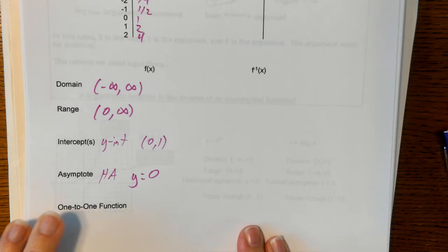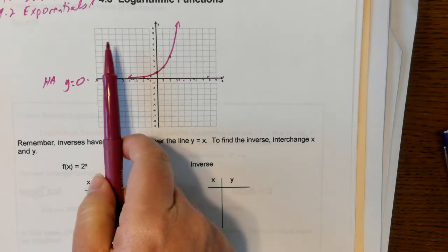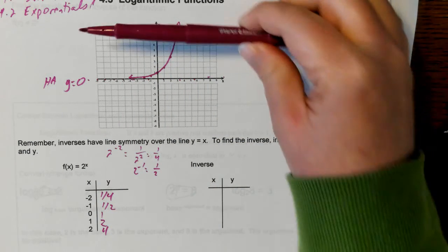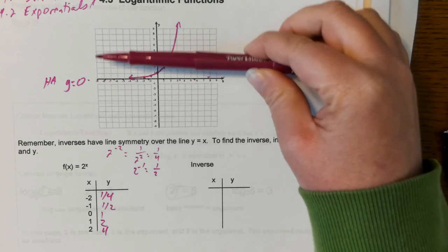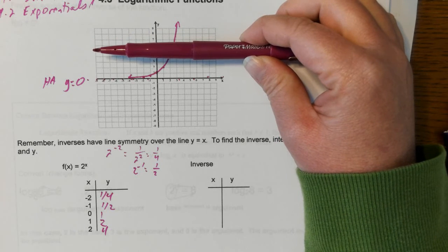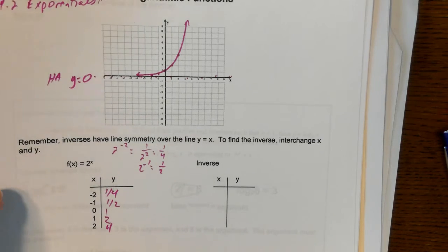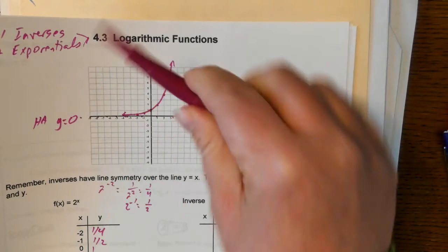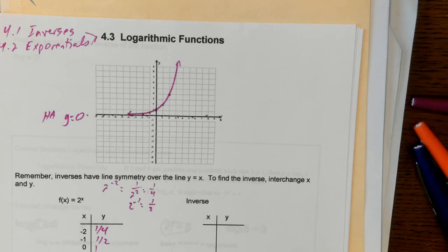Then they ask us if it's one-to-one. Remember, one-to-one means the original is a function and the inverse will also be a function. The original definitely passes the vertical line test. The inverse will be a function because this passes the horizontal line test — if I draw horizontal lines, I never touch a point more than once. So the y's are not repeated, meaning when we trade x's and y's, the x's won't repeat. Yes, this is a one-to-one function since it passes both the vertical and horizontal line tests.